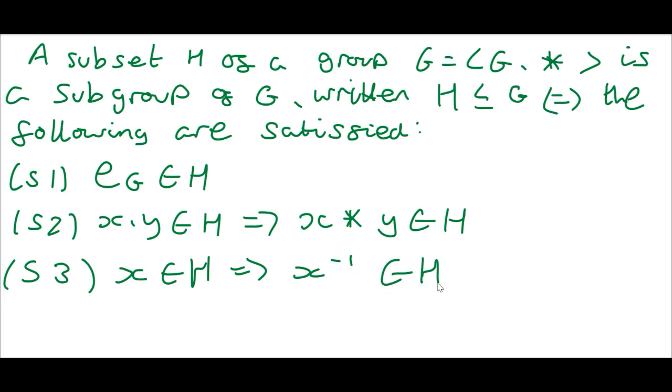These axioms essentially say a set H is a subgroup of G if it's a subset of G. In the definition it states a subset, so if you're given H is a subset, you just have to prove these three axioms.